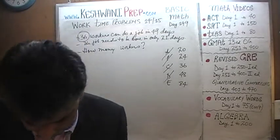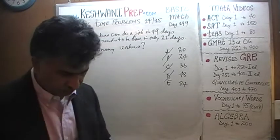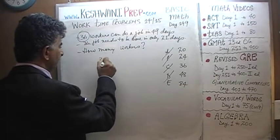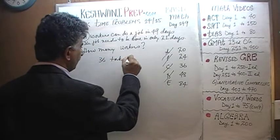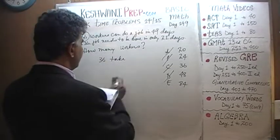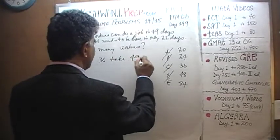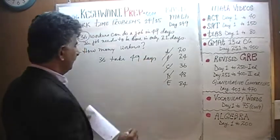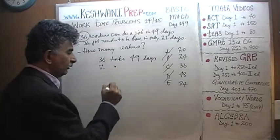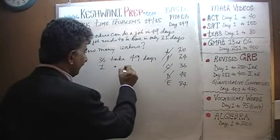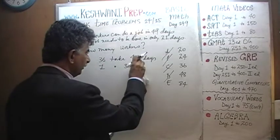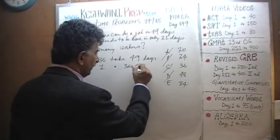Now let's do it in the classical way. We are told that 36 workers take 49 days. If 36 workers take 49 days, then one worker working by himself will take 36 times 49 days.